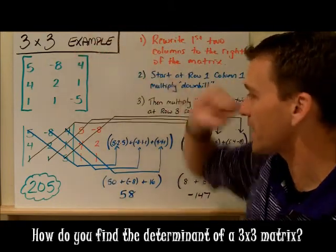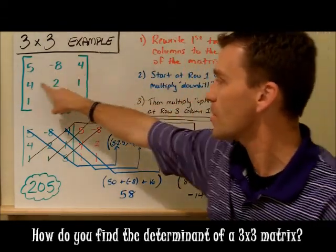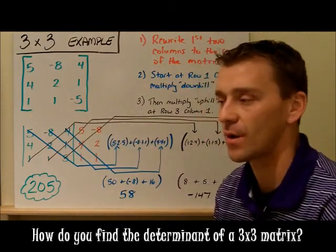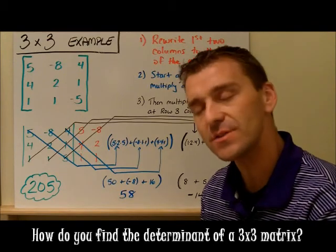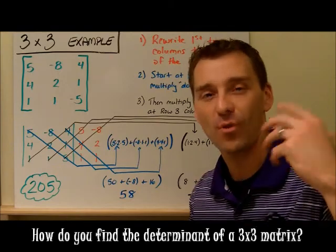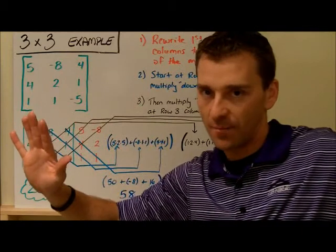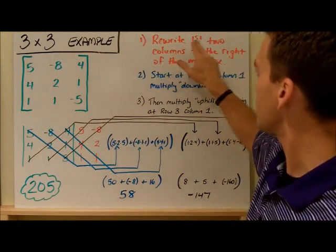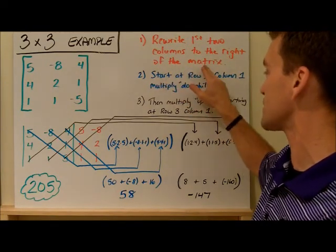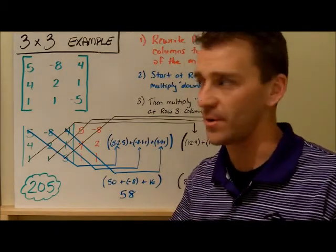Here's a three by three example. The entries are five, negative eight, four in the first row; four, two, one in the second row; and one, one, negative five in the third row. So it is a three by three — a wonderful square matrix — so we can find the determinant. You're going to do the same process as with the two by two, but you've got to do a little bit more work. Step number one: before you do anything when it's asking for a determinant, you must rewrite the first two columns of the matrix to the right of the actual matrix itself.